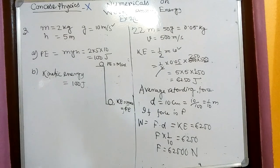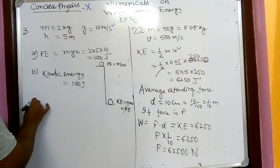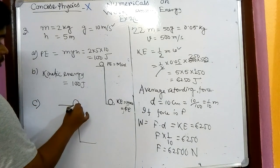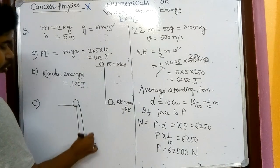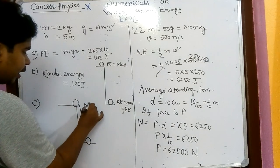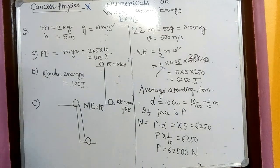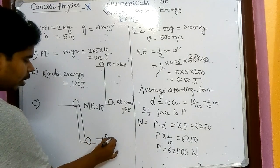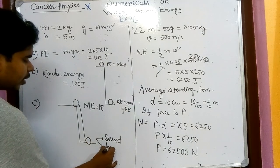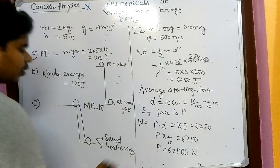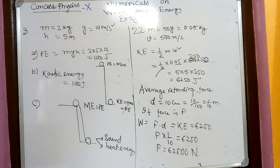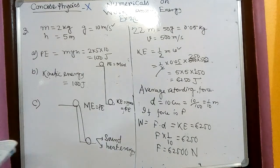Part c: what happens to mechanical energy after the ball hits the ground and comes to rest? The ball falls, reaches the ground, and stops. The total mechanical energy — potential energy — is converted: some amount converts into sound energy and some amount converts into heat energy. So the mechanical energy converts into heat and sound energy.